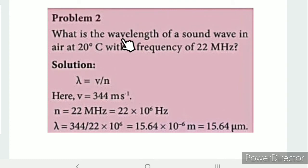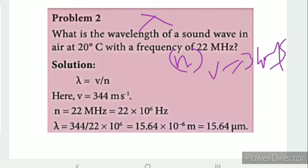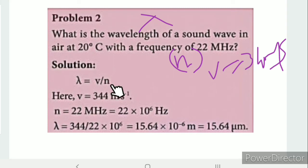Second problem: What is the wavelength of the sound wave in air at 20 degrees Celsius with a frequency of 22 MHz? We need to find wavelength. Using the formula v = nλ, we rearrange to get lambda = v divided by n.